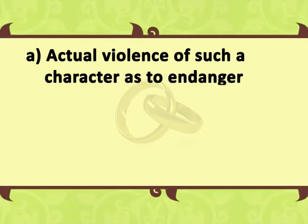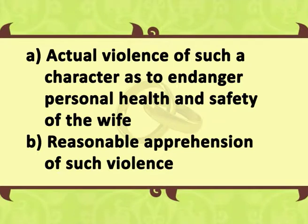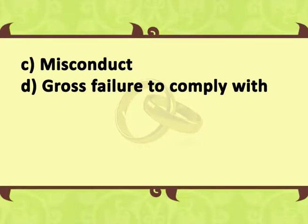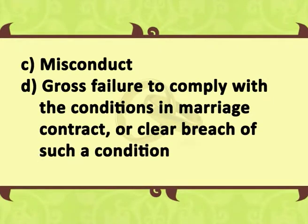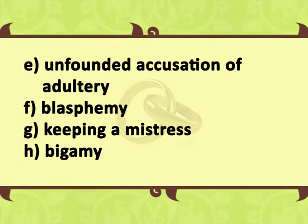This ruling has guided various Indian courts, which have in different cases regarded the following as instances of cruelty on the part of the husband: actual violence of such a character as to endanger personal health and safety of the wife; reasonable apprehension of such violence; misconduct; gross failure to comply with the conditions in a marriage contract or clear breach of such a condition; unfounded accusation of adultery; blasphemy; and keeping a mistress and bigamy.